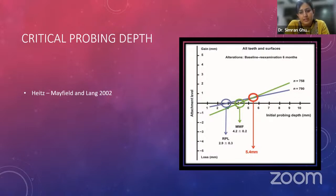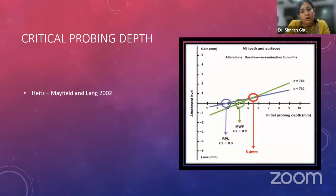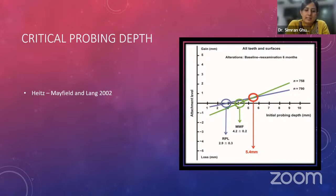According to the latest 2018 classification, any pocket greater than 3 mm after performing phase one therapy is also suitable for surgical procedures. Given all these values, a clinician is often confused, so each case must be selected and assessed individually to decide whether or not the patient is a suitable candidate for periodontal surgery.